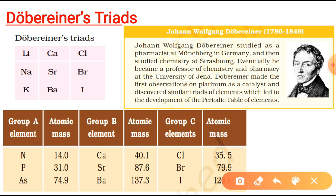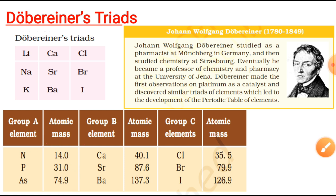Group A elements: nitrogen, phosphorus, and the last one. The atomic mass of the first is 14 and the last is 74.9. If you take out the average — 14 plus 74.9 divided by 2 — it gives you approximately 31, which is near the atomic mass of phosphorus, the middle element.